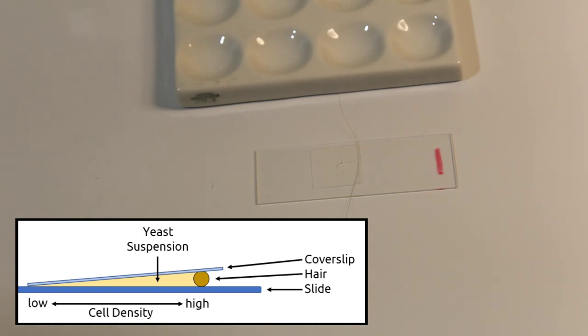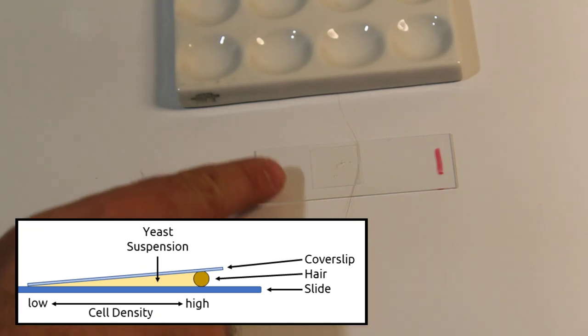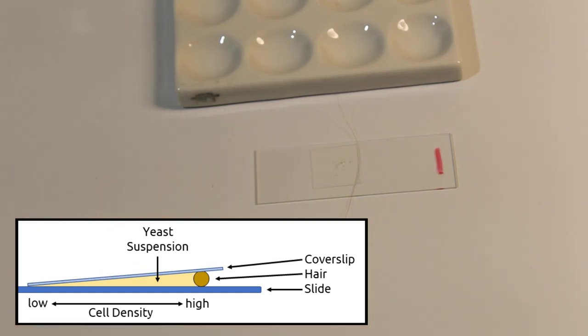What this will do is create a triangular cross-section that is thickest at the hair and thinnest on the edge, so you should be able to move back and forth on the sample in order to find a region with a reasonable density of yeast for viewing.